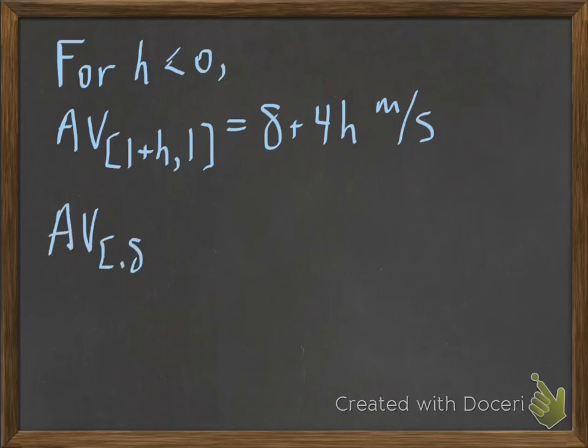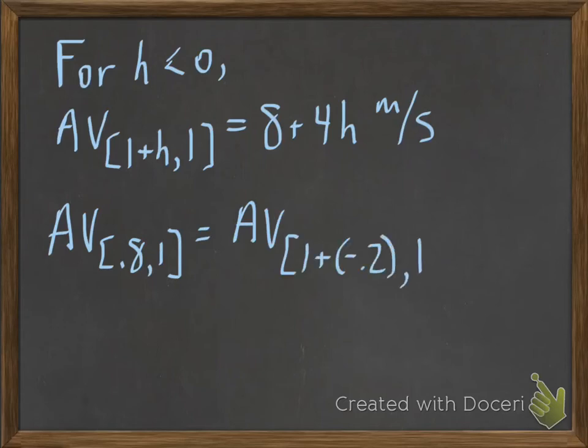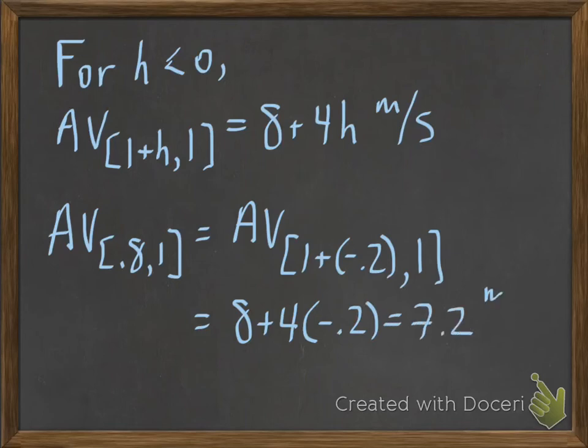So, in this case, if I write 0.8 as 1 plus something, it's 1 plus negative 0.2, so that's my h value, which means that my average velocity is 8 plus 4 times negative 0.2, which gives me 7.2 meters per second.